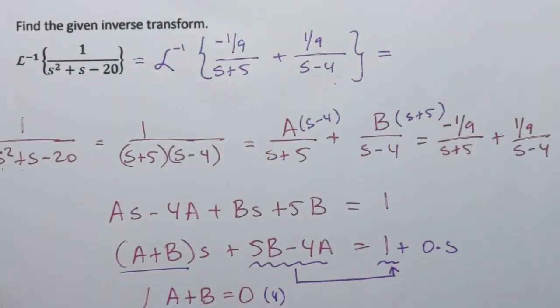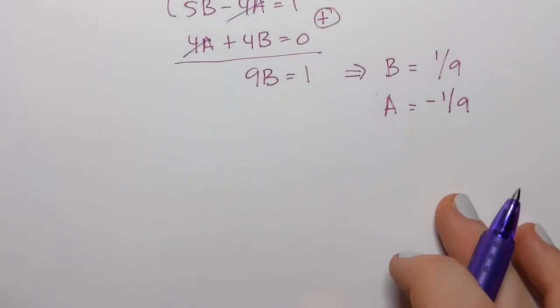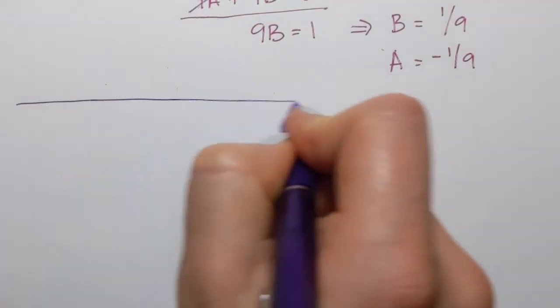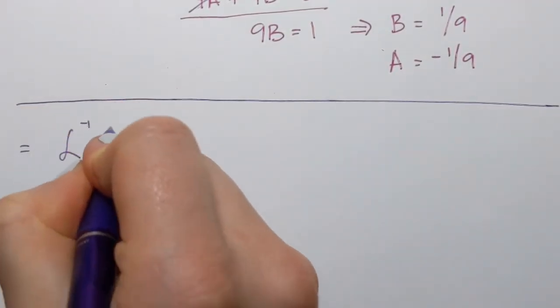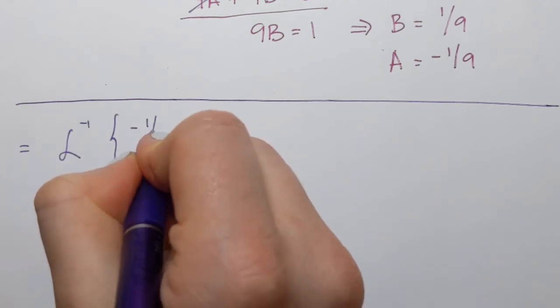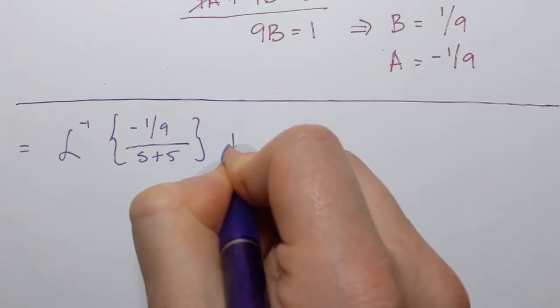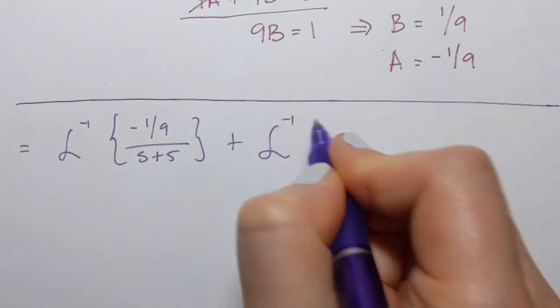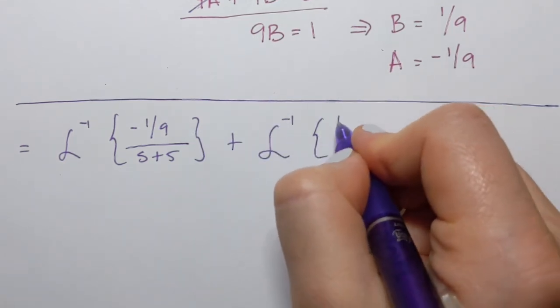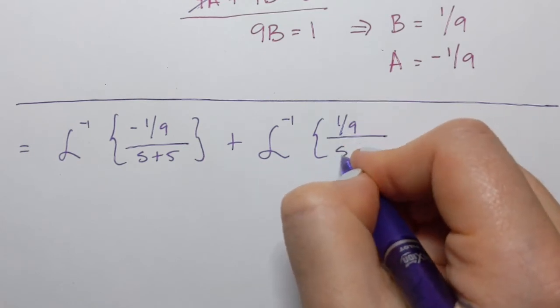And we know that since it's a linear transform, we can simply split it up into two inverse transforms. So inverse transform of the first one plus inverse transform of the second one. Let me rewrite what I'll have.